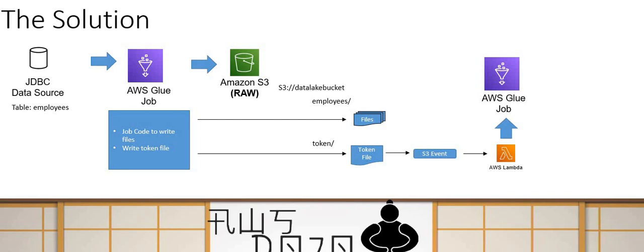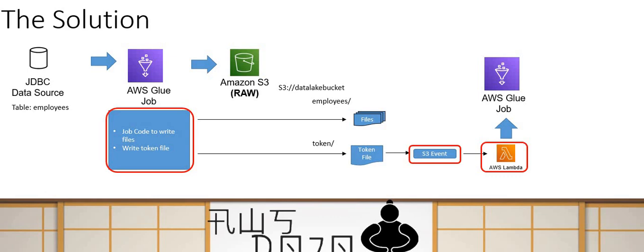You need to make changes in three places. First, change your Glue job code to write a token file once your data files are written. Second, change your S3 event to look only at the token file. Third, update your AWS Lambda function to look into this S3 event and start the Glue job. Let's go through these three changes one by one.